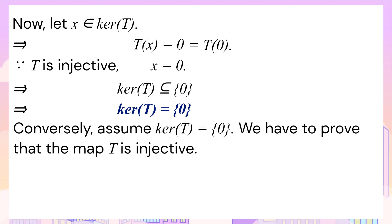Now to prove the converse part of this theorem, let the kernel of T contains only the zero vector. To prove the injectivity of T, consider T(u) equals T(v), where u and v are any two vectors in X.